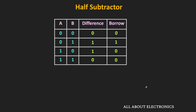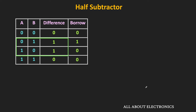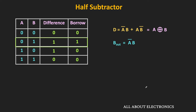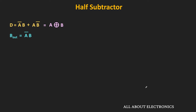So this is the truth table of the half subtractor. As you can see, this difference output is 1 only for two input combinations — that is when A is 0 and B is 1, or when A is 1 and B is 0. So algebraically, we can say that D is equal to A_bar·B + A·B_bar, or equivalently it is equal to A XOR B. Likewise, this borrow output is 1 when A is 0 and B is 1, or algebraically, B_out is equal to A_bar·B. So in this way, we got the Boolean expressions for the difference as well as the borrow output.